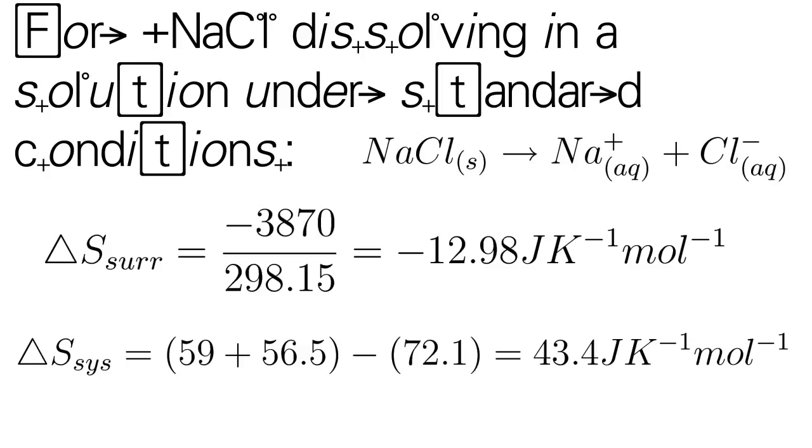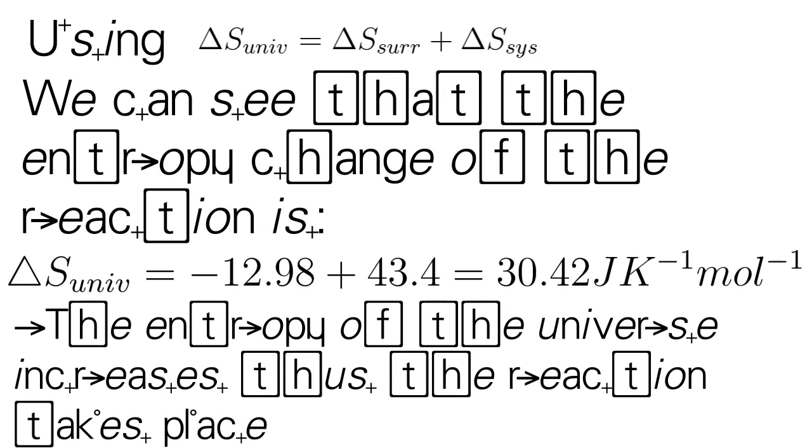In the end, the value for the entropy change of the system was 43.4 joules per Kelvin per mole, and the value for the entropy change of the surroundings was minus 12.98 joules per Kelvin per mole. Thus we can therefore prove that the total entropy change for the universe is in fact positive: 30.42 joules per Kelvin per mole to be exact.